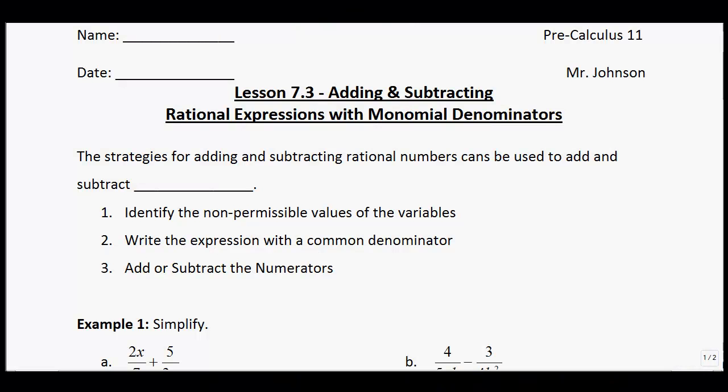This is lesson 7.3, adding and subtracting rational expressions with monomial denominators. As you've seen in the last couple lessons, there's not a lot of theory behind these. You guys have a lot of the tools in your toolkit already to simplify these questions, so I'm just giving you some more examples. I want you to remember as you're watching these videos to, once you've seen maybe one or two examples, try a couple on your own, then fast forward and see how you do. I think that'll help your learning out.